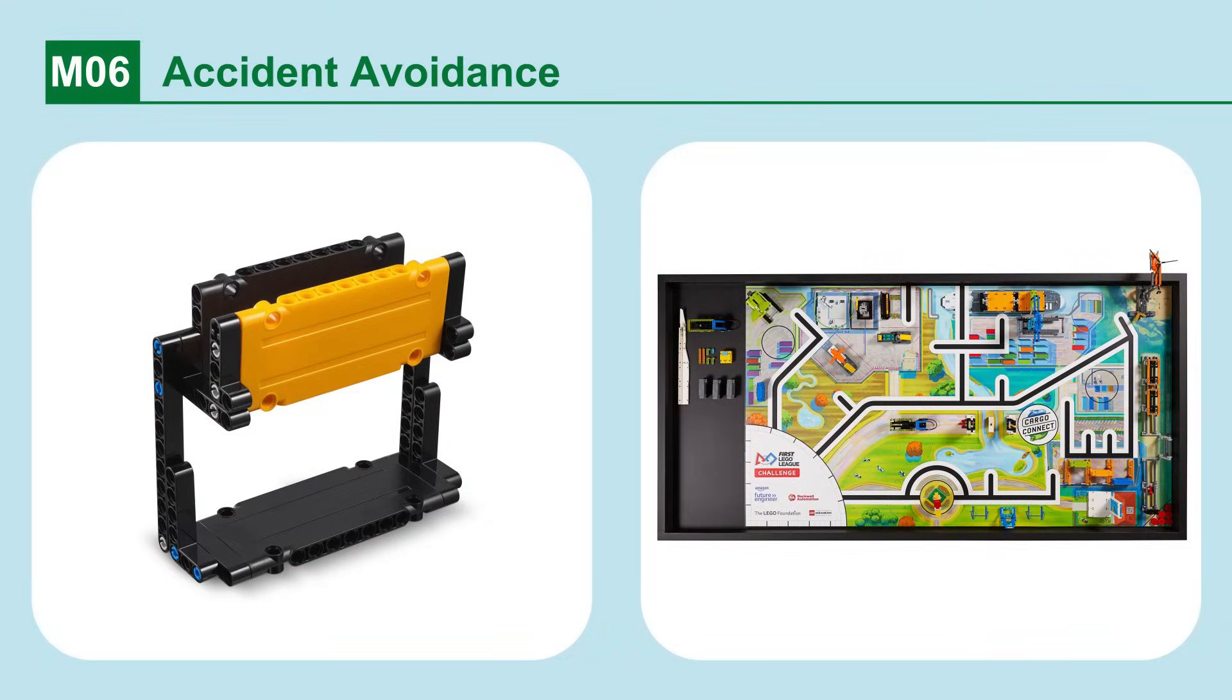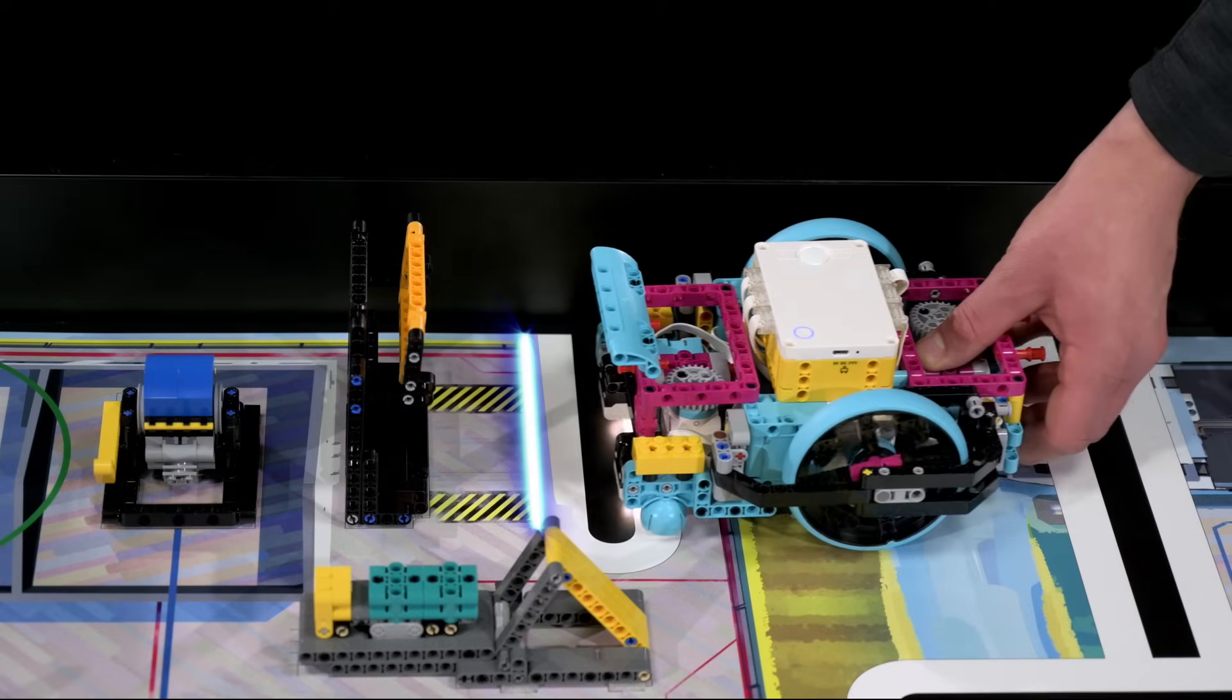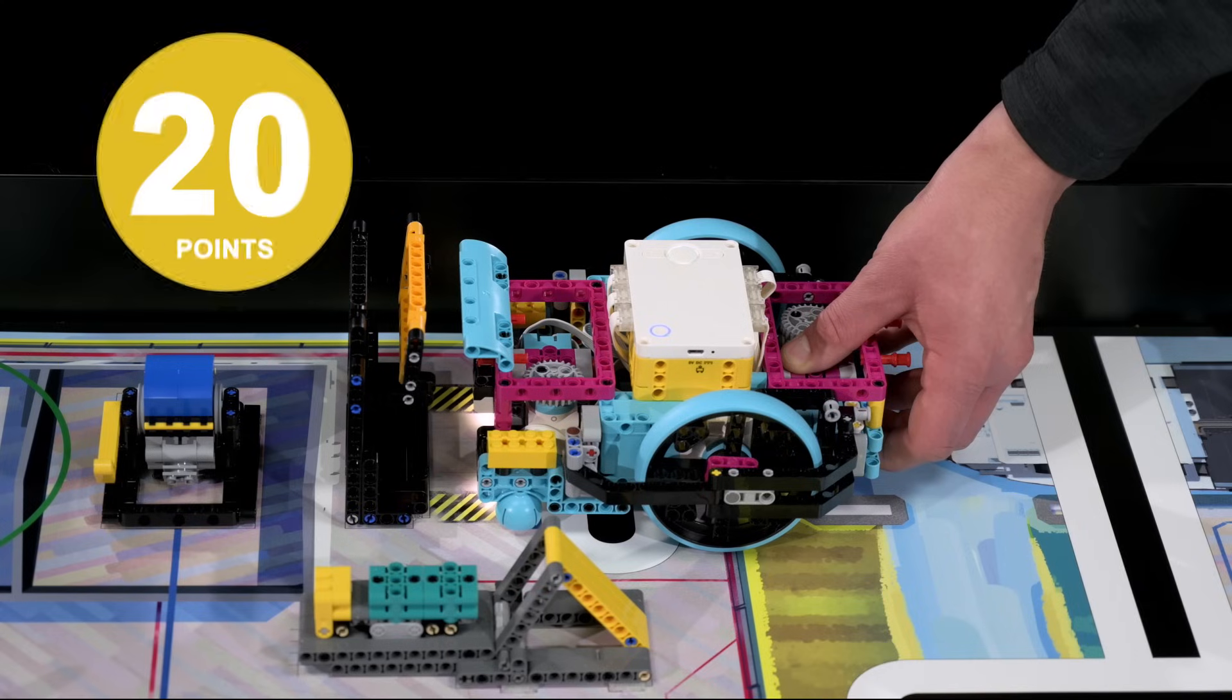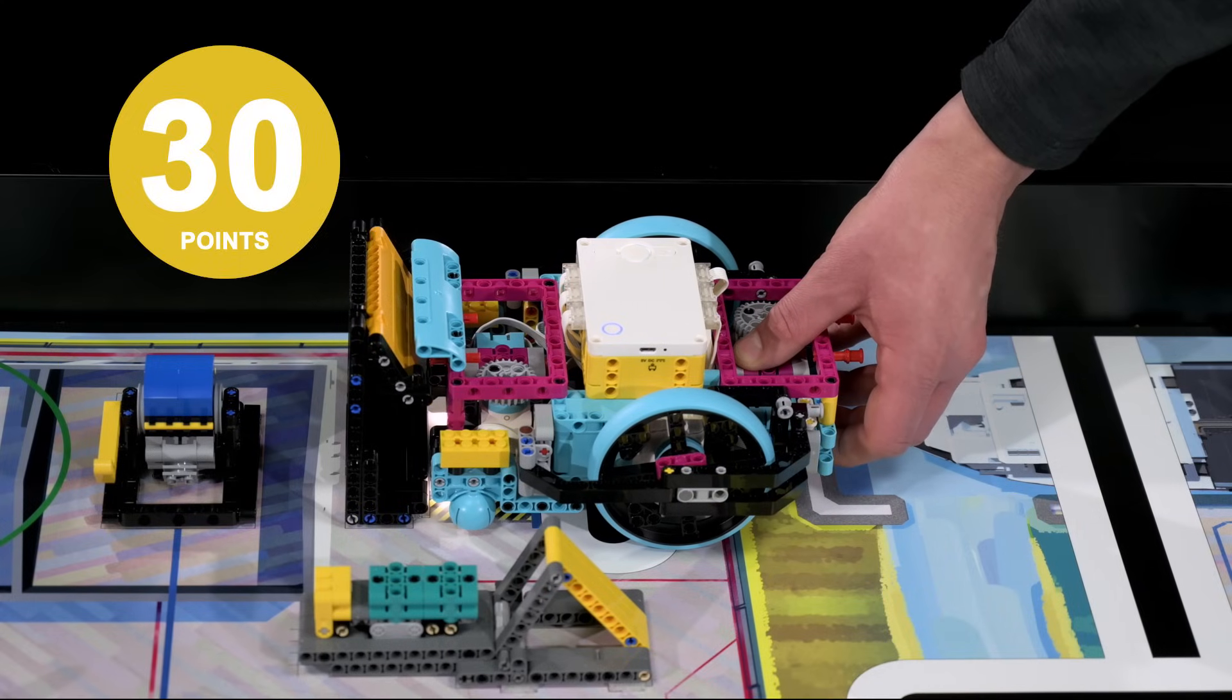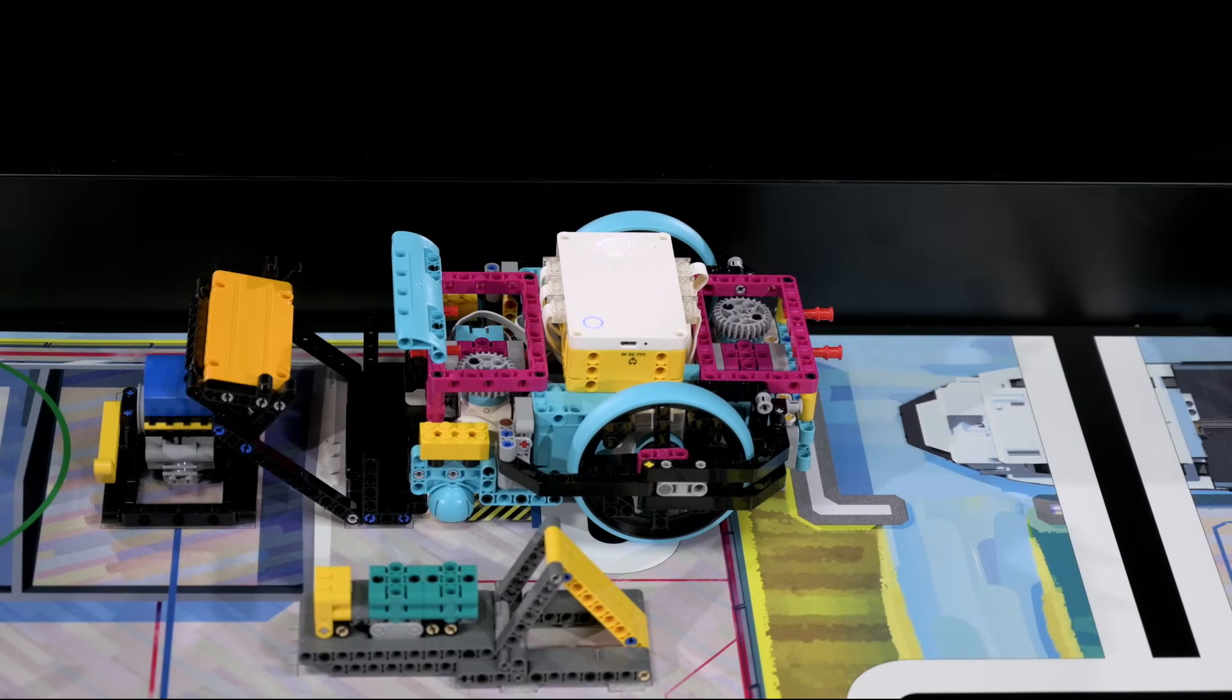Mission 6. Accident Avoidance. Park safely without causing an accident. At the end of the match, if the robot is parked over the blue accident avoidance line and only the yellow panel is knocked down. But if the robot goes too far and the black frame is knocked down.